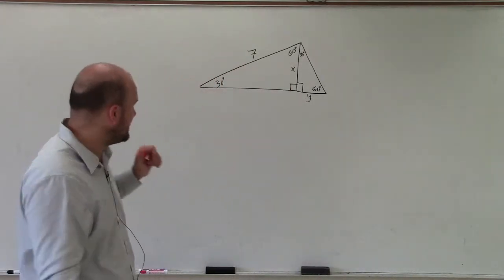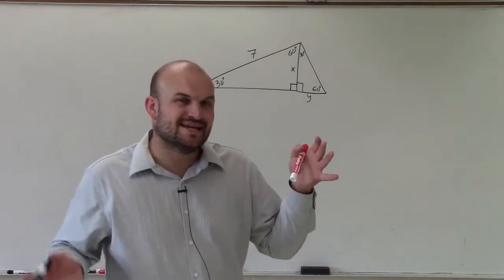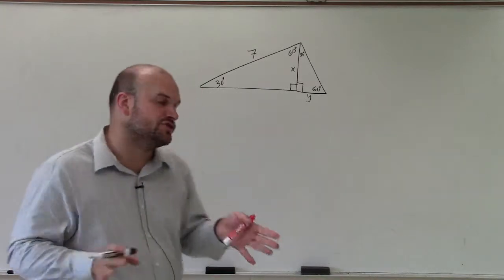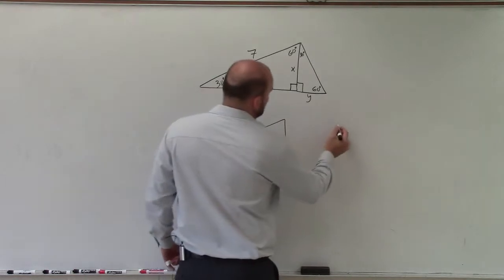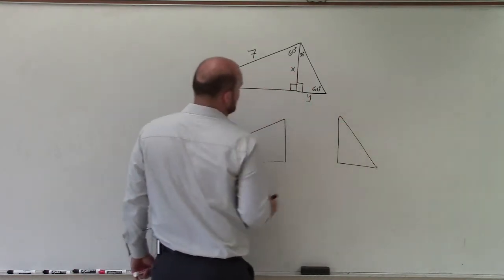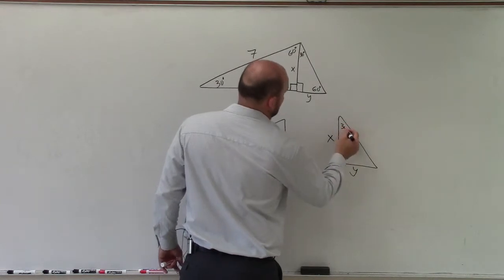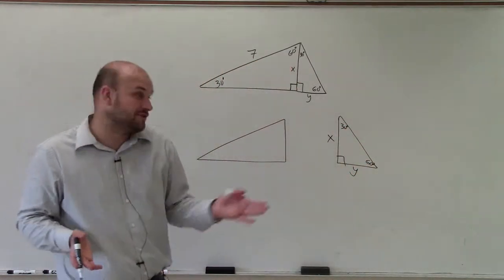But if I want to solve for x and y here, the best thing that I would do is, rather than trying to get confused with all these triangles, is just separate them into two separate smaller triangles. So I have this one, and I have this one. Now, for this triangle, we have x, y, 30 degrees, 60 degrees. So really, we have no information for this triangle.